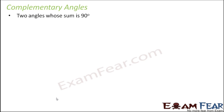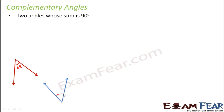What are complementary angles? These are angles whose sum is 90 degrees. Two angles are said to be complementary if their sum is 90 degrees. Let's say you have two angles — one is 40 degrees and the other is 50 degrees. The sum would be 40 plus 50, which is 90 degrees. Therefore, these two angles are complementary angles.